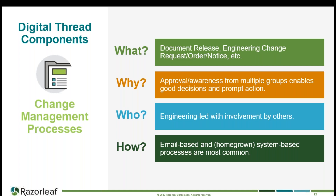Another important activity is change management. Document release processes, engineering change requests, ECO, ECN — these are critical because multiple disciplines in the company must review and approve changes to a product, since they all contributed when the product was originally defined. Engineering typically leads these processes, which is why they're called engineering change requests. These are done in various ways — lots of companies use email, and plenty have homegrown systems based on Access or similar tools — because there's typically a high volume of changes happening to products over time.